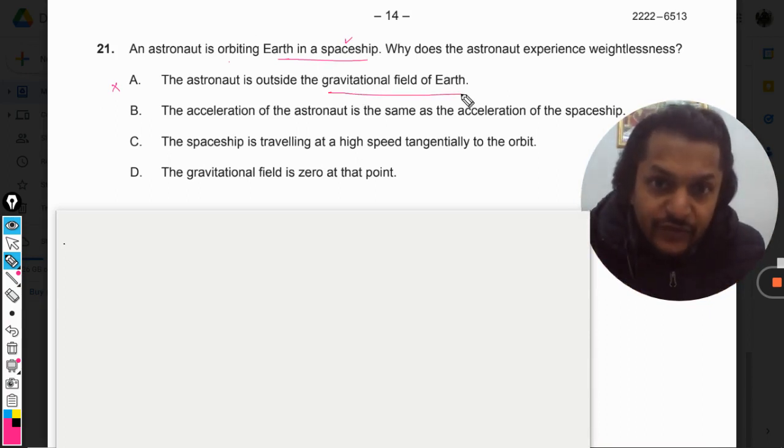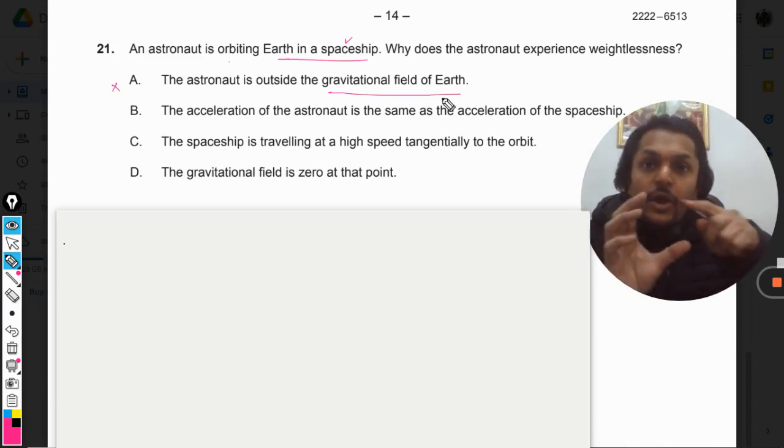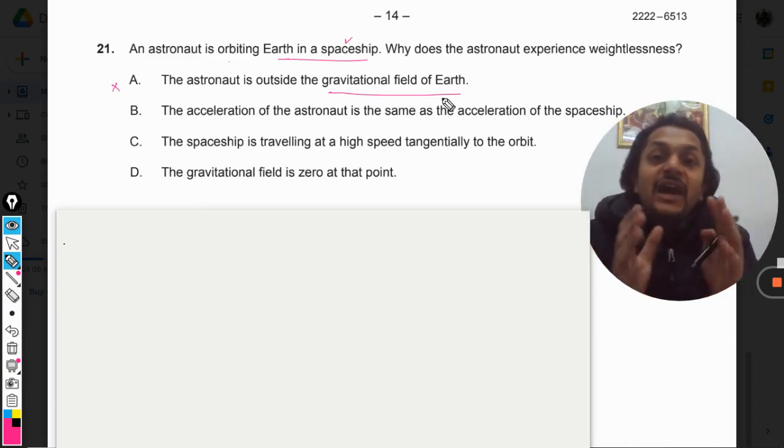If there is no gravitational field of Earth, the satellite or the spaceship should move away from the Earth very easily. But that doesn't happen. On the contrary, they keep on revolving around the Earth. It means they are bound by the gravitational field of Earth. So the first option is wrong.